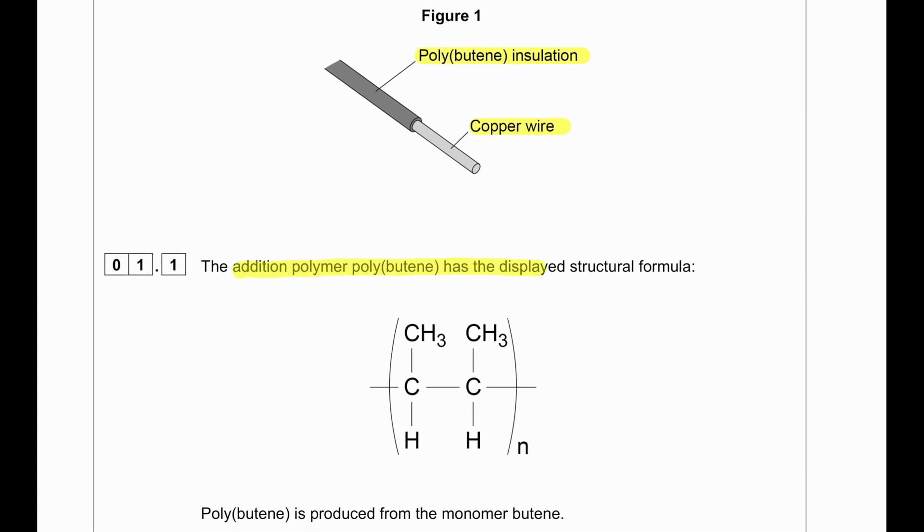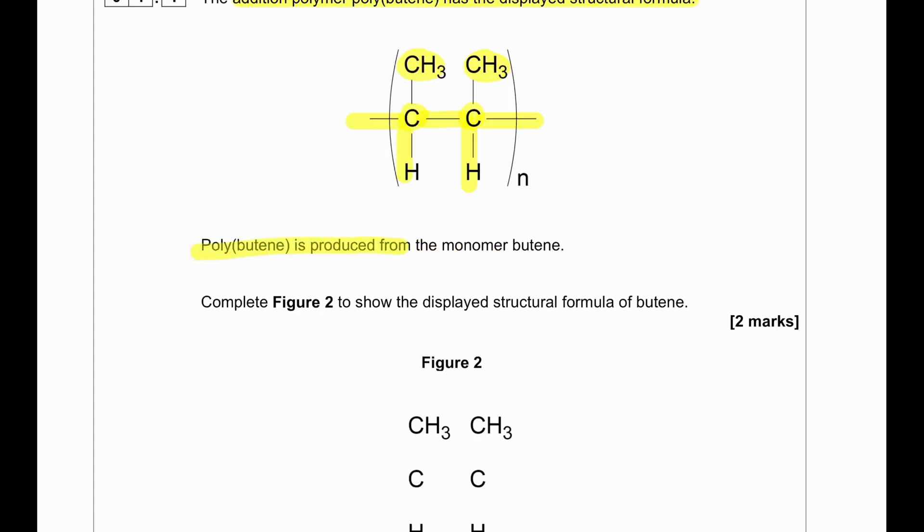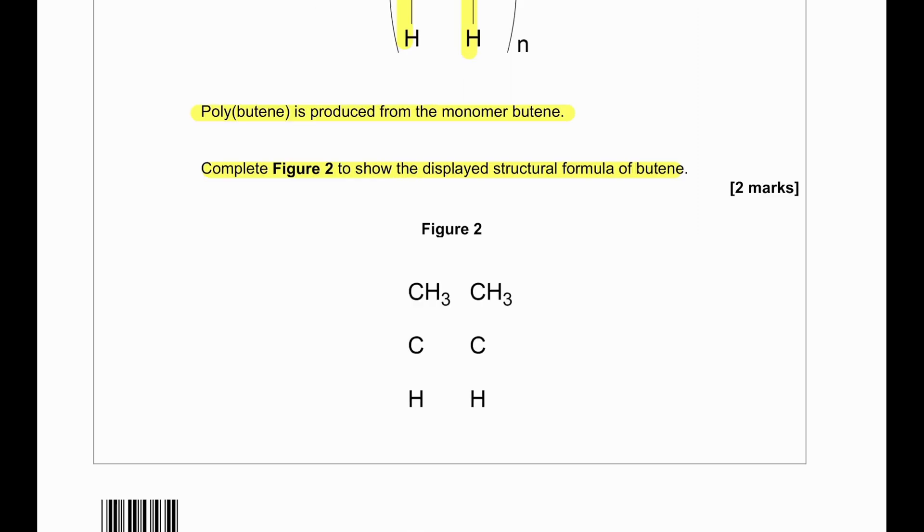The addition polymer polybutene has the displayed formula CC single bond with CH3 on top and H at the bottom with two hands extended on two sides. Polybutene is produced from the monomer butene. Complete Figure 2 to show the displayed structural formula of butene. In order to draw a monomer from a polymer, first of all we're going to take off the two hands and re-establish a carbon-carbon double bond. So CC double bond with CH3, C single bond, and H on each carbon.